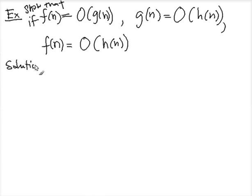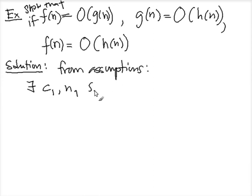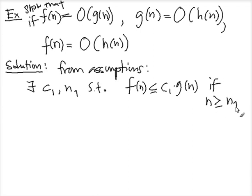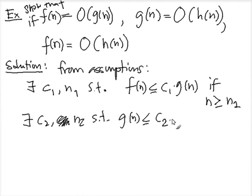Solution: Now to do that, basically we need to show that there exists two positive constants n₀ and c that satisfy the previous definition. So from the assumption, what do we know? We know that there exists c₁, n₁, such that f(n) is less than c₁·g(n) if n is at least n₁. We also know there exists c₂, n₂, such that g(n) is less than c₂·h(n) if n is at least n₂. And c₁, n₁, c₂, n₂ are positive numbers.